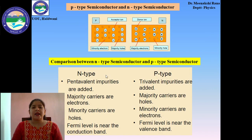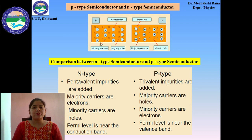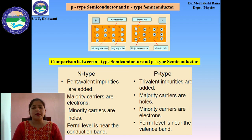We can compare N-type and P-type semiconductors as follows. In N-type semiconductors, pentavalent impurities are added, while in P-type, trivalent impurities are added. In N-type materials, the majority charge carriers are electrons, while the minority charge carriers are holes. In N-type materials, the Fermi level is near to the conduction band, while in P-type material, the Fermi level is near to the valence band.